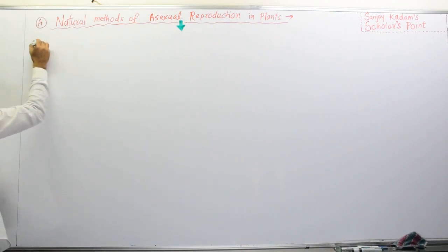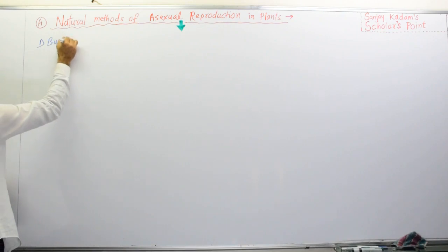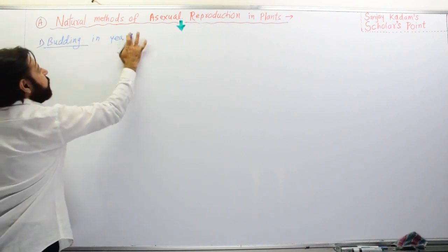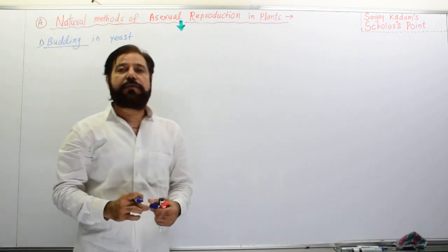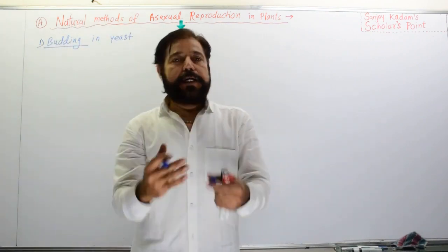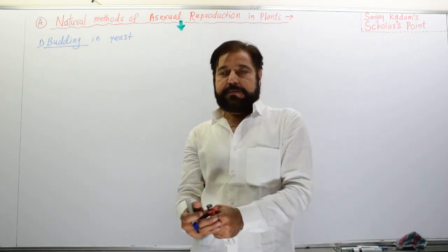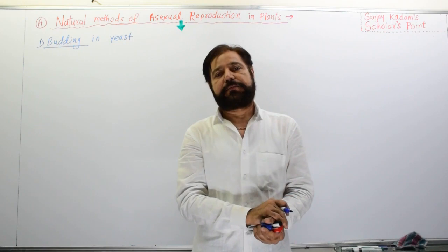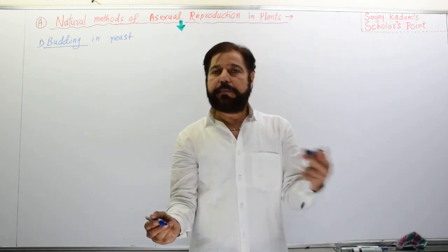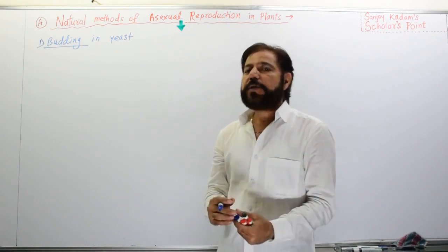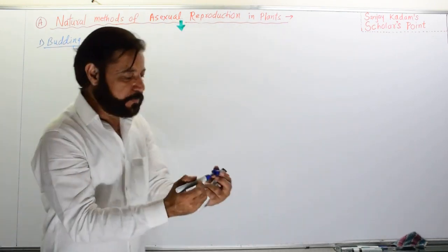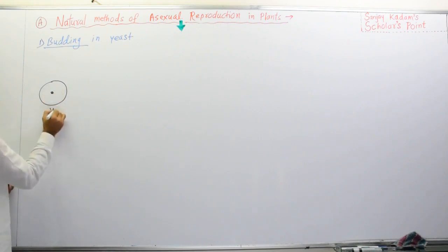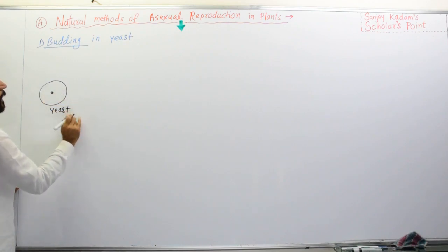The first method is budding. Yeast is a unicellular fungus and shows unicellular budding, while hydra is an animal showing multicellular budding. So budding has two types: unicellular and multicellular. Unicellular budding occurs in yeast.